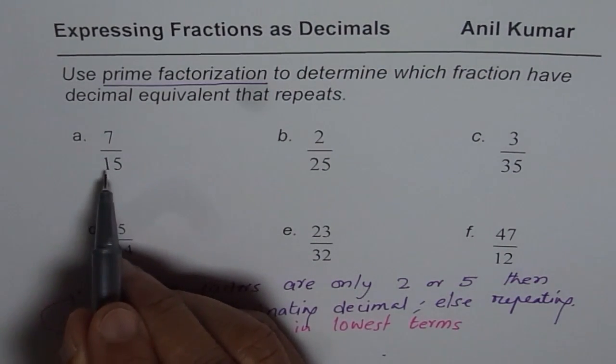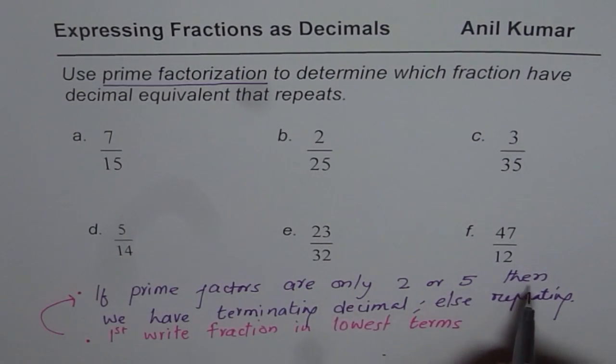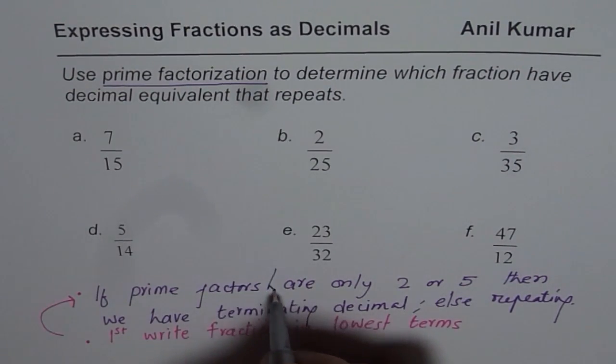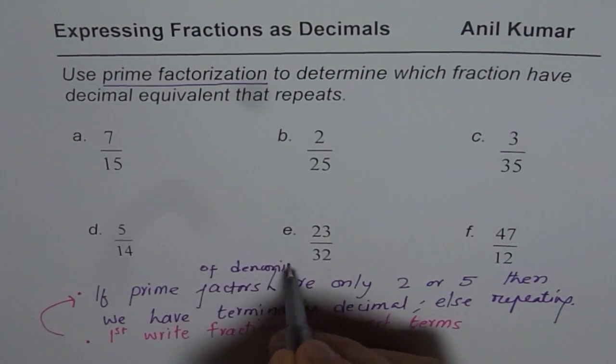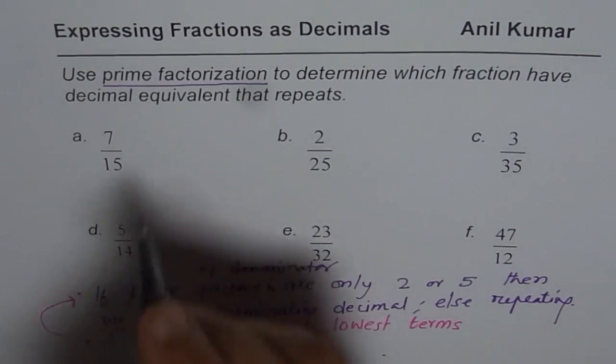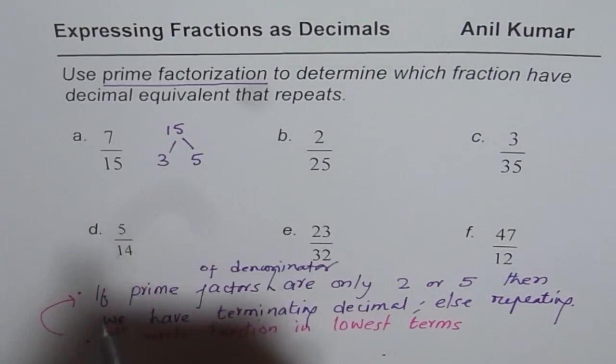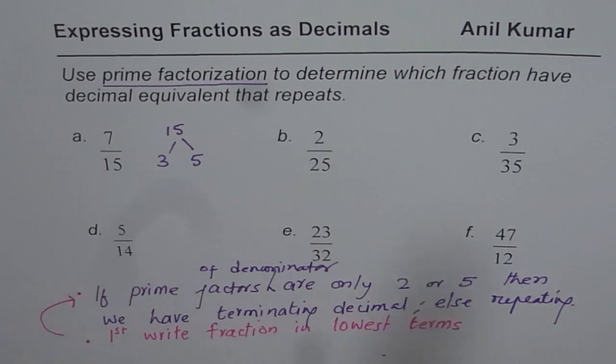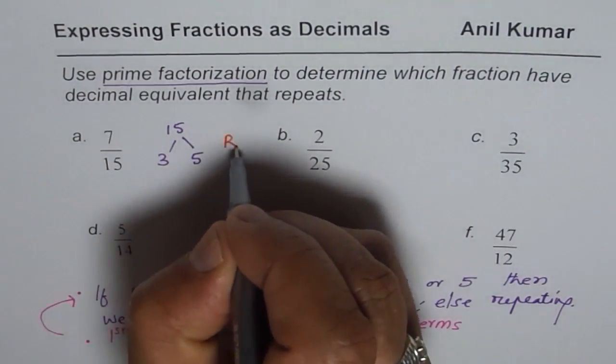Denominator is 15, so we check prime factors of the denominator. Prime factors of 15 are 3 and 5. Since 3 is also a factor, this fraction will result into repeating decimal. So this one is repeating.